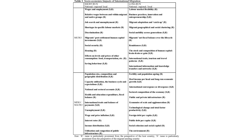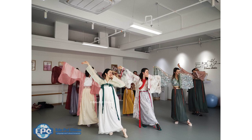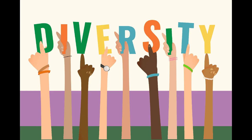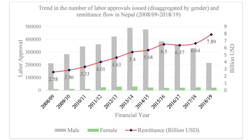In conclusion, migration has both positive and negative impacts on cultural heritage. While it can lead to the enrichment and diversification of cultural practices, it can also result in the loss and erosion of cultural identity. To ensure the preservation of cultural heritage, we must work together to promote intercultural understanding and respect. In the next segment, we will explore the impact of migration on language and literature.